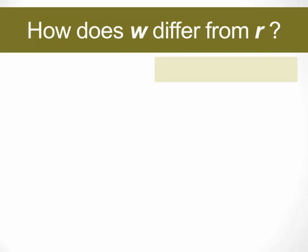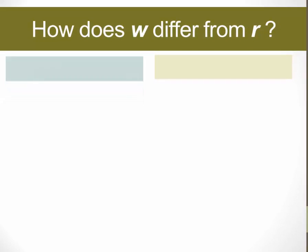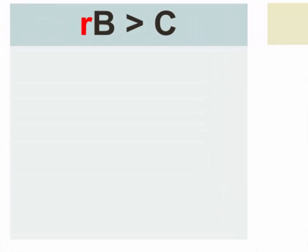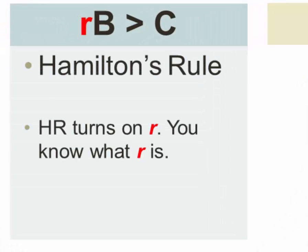Our question, then, is how does W differ from R? In Hamilton's Rule, we have R multiplied by the benefit, which has to be greater than the cost. And we know that Hamilton's Rule turns on R, and at this point in the course, you know what R is.